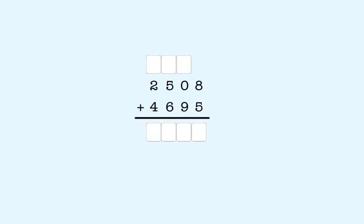For example, two thousand five hundred eight plus four thousand six hundred ninety-five. Remember when adding, we always start with the ones place.